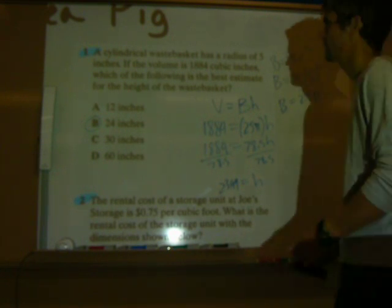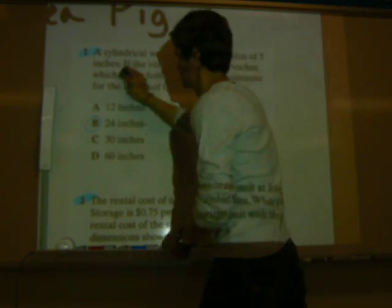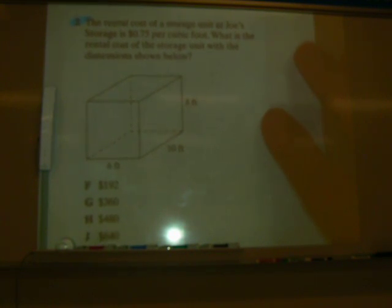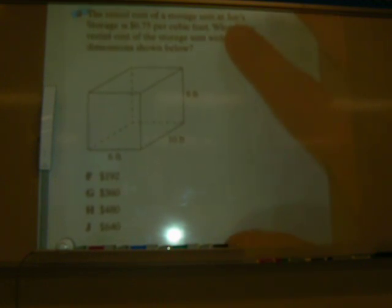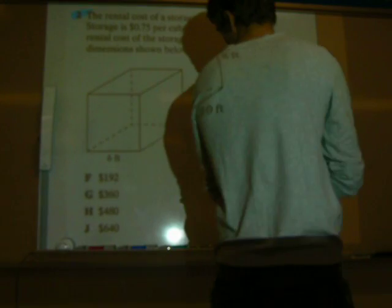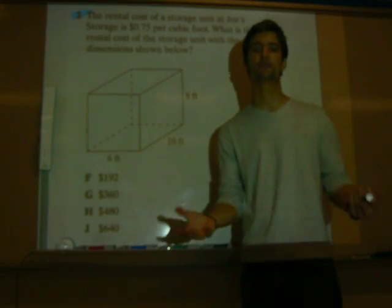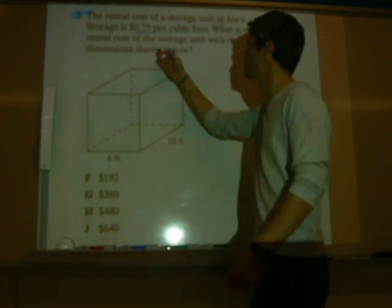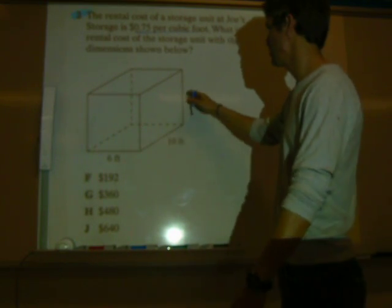So, now, let us look at number 2. Not really number 2. It's the fifth one. The rental cost of a storage unit at Joe's Storage is 75% per cubic foot. What is the rental cost of the storage unit with the dimensions shown below? So, what you're going to do is figure out the volume.